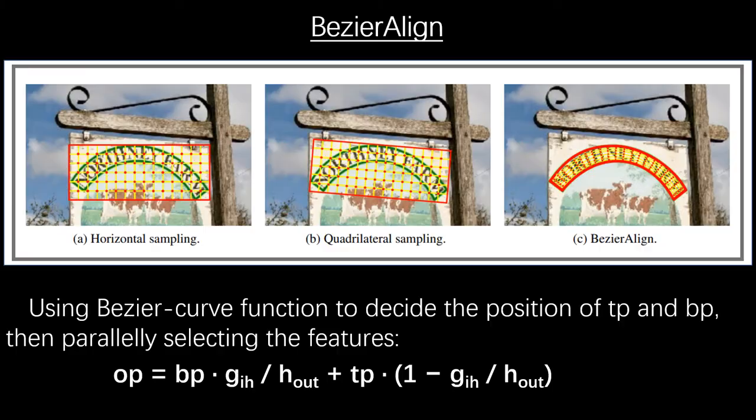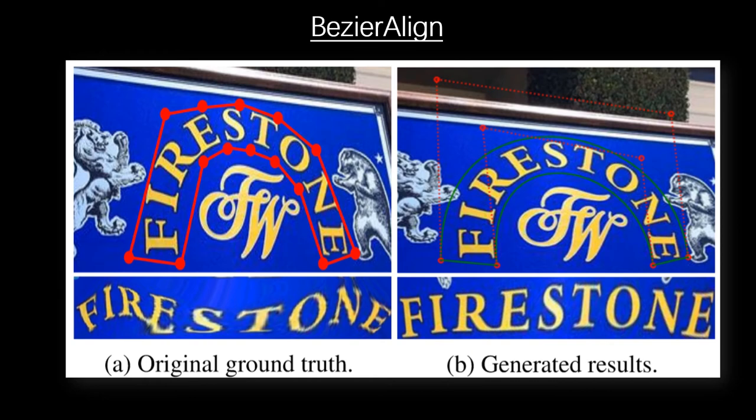After the model predicts the control points, we propose Bezier align for feature alignment. Previous sampling methods will inevitably collect background information. Our Bezier align only aligns the pixels in the area surrounded by two curves. From the visualization of this feature, it can also be found that the Bezier align is significantly helpful for the recognition of curved text.